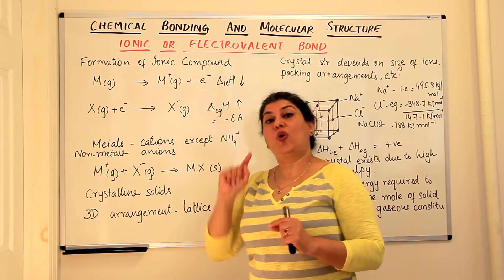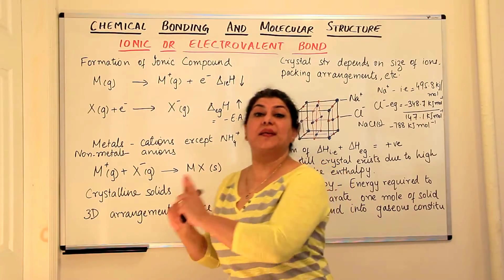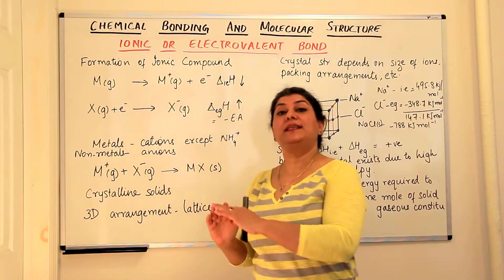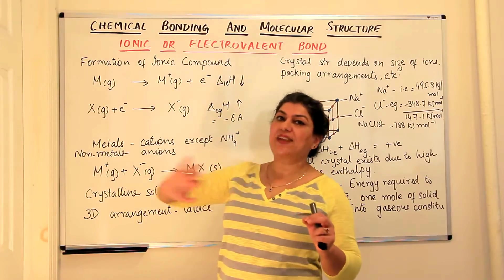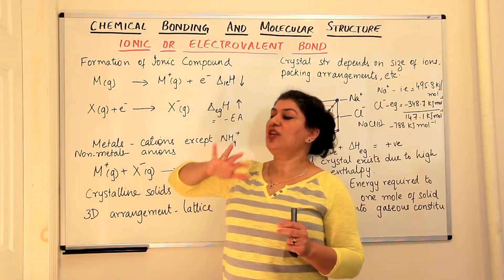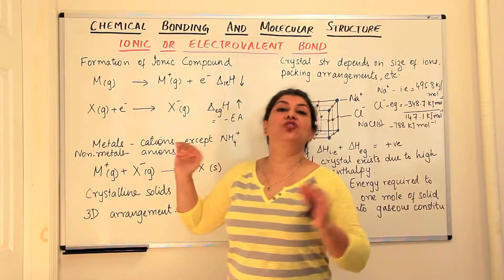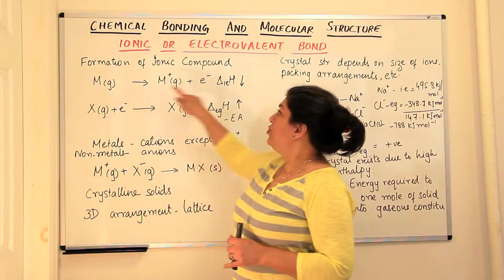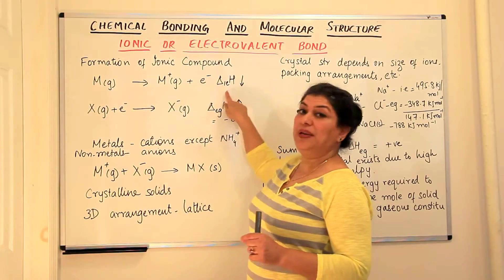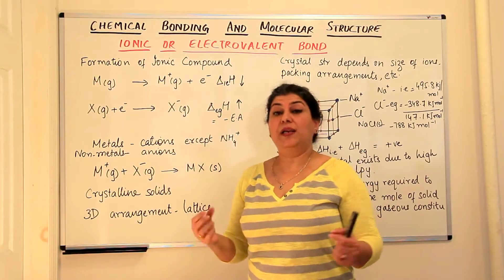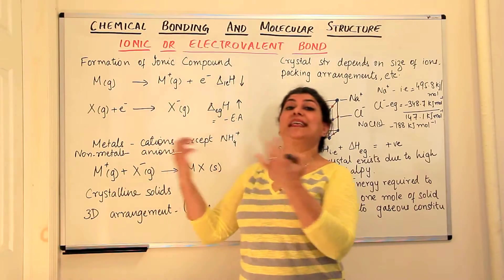All chemical reactions take place with the intention of acquiring stability, and stability is acquired when energy is lowered. Therefore, any reaction which is exothermic — that is, which results in the loss of energy — should lead to stability. The formation of the positive ion always has a positive enthalpy, which means it is always an endothermic reaction; it always gains energy.